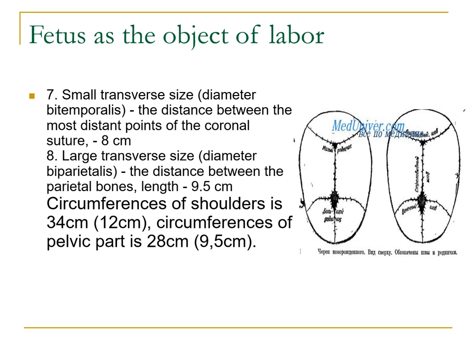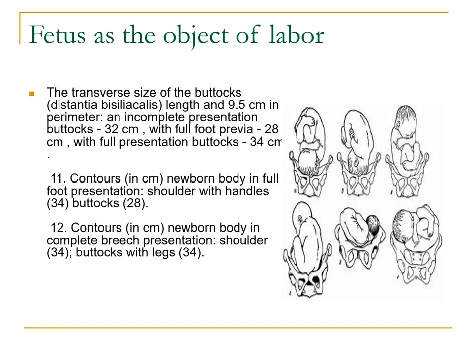Your small transverse size (diameter) is the distance between the most distant points of the coronal suture, which is 8 cm. Your large transverse size (diameter biparietalis) is the distance between the parietal bones, length 9.5 cm. The circumference of the shoulders is usually 34 cm, with a circumference of the pelvic part of 28 cm. For the transverse size of the buttocks, length is 9.5 cm; in incomplete presentation of buttocks with foot presentation, the perimeter is 28 cm, and in full presentation it is 34 cm.